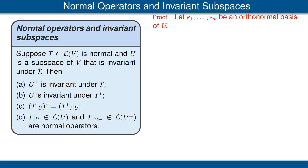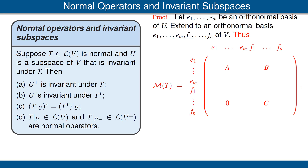Let's look at the proof of part A of this result. We start out by letting E1 up to Em be an orthonormal basis of the invariant subspace U. Extend to an orthonormal basis of the whole space V by adding some additional vectors F1 up through Fn. The matrix of T with respect to this basis has the form shown here, where A, B, and C are themselves matrices of the appropriate size. The key point is the 0 in the lower left corner, which represents an n by m matrix consisting of all 0s. The reason that matrix contains only 0s is that U is an invariant subspace of T.